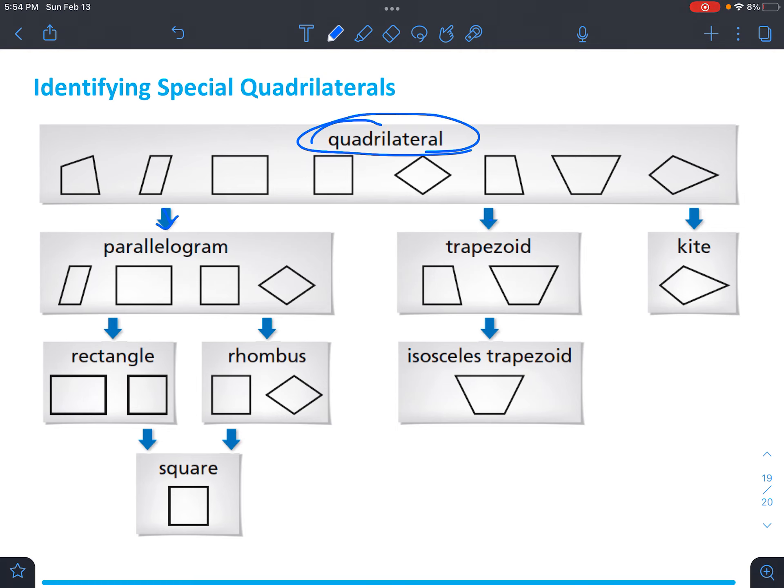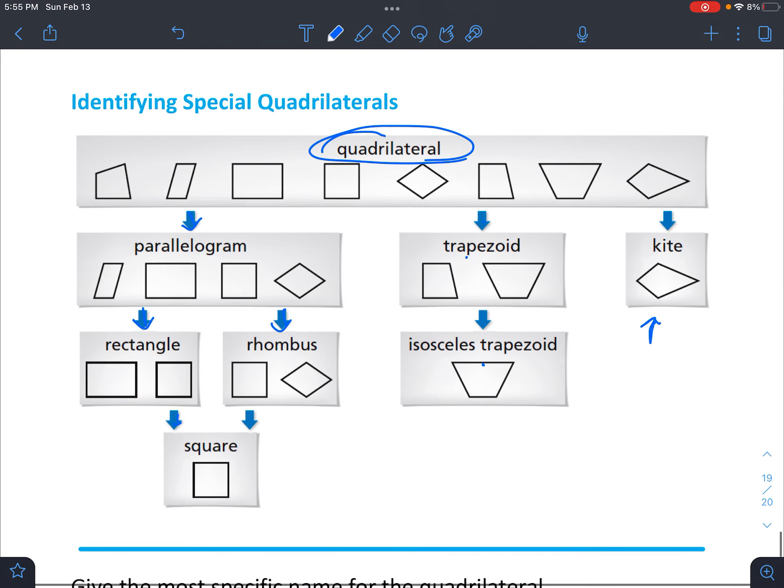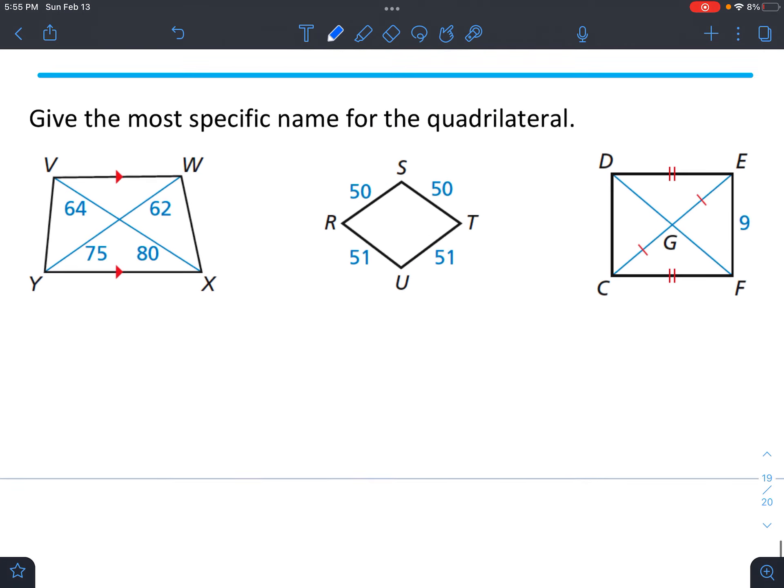None of those can equal each other, right? These are all different types. But there are types of parallelograms, which are the rectangle, the rhombus and the square. And then isosceles trapezoid is a type of trapezoid. But there isn't any other special kind of kite. And so we'll just have that as its own little category.